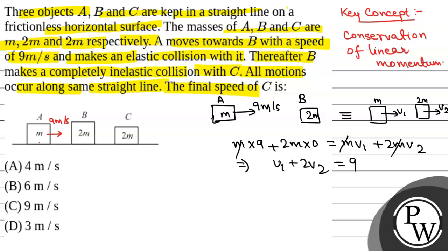Now, since collision between A and B is elastic, coefficient of restitution E will be equal to 1. And E will be equal to V2 minus V1 divided by 9. So, here we have V2 minus V1 equal to 9.